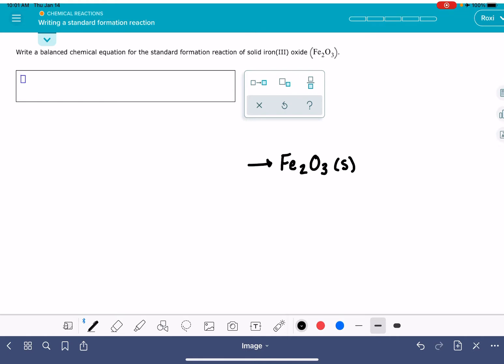The other rule of the standard formation reaction is that the stoichiometric coefficient of this particular product absolutely has to be 1. It's so important, in fact, I'm just going to write that in. So in a standard formation reaction, the stoichiometric coefficient of the product is always going to be 1.